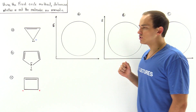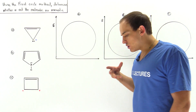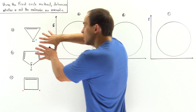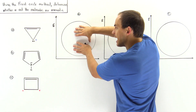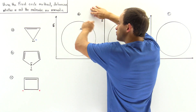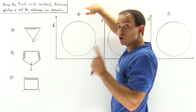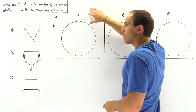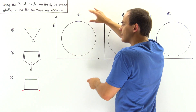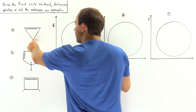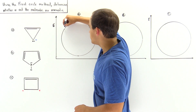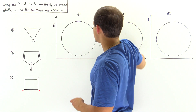Let's begin with molecule A. The way we use the Frost circle technique is we take our molecule, place it inside a circle so that all the vertex edges touch the circumference, and we orient the vertex of our polygon exactly downward — so the bottom point ends up here, and these two points touch as shown.